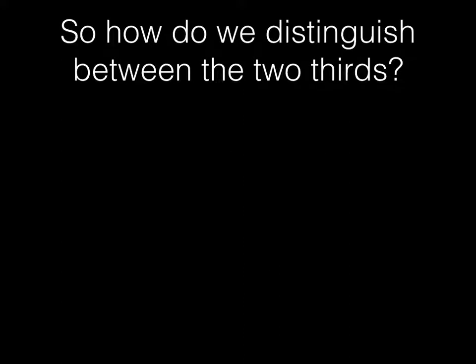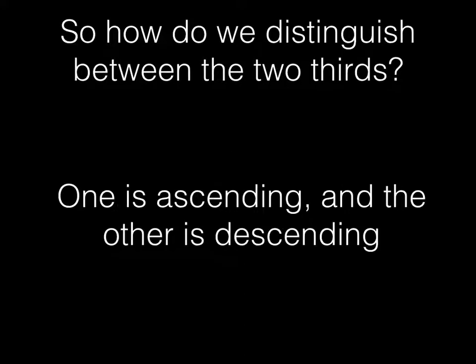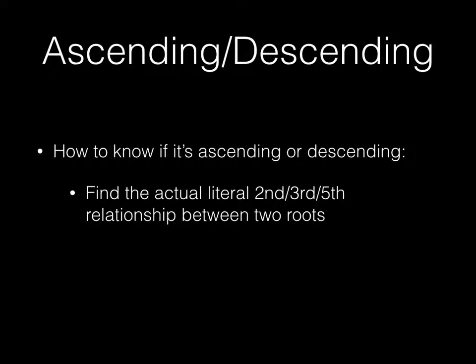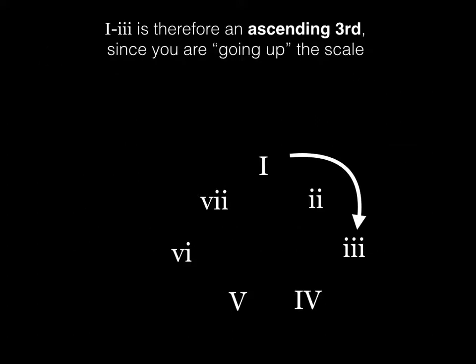So how do we distinguish between these two thirds? One is ascending and the other is descending. How do we know which is which? We have to find the actual literal second, third, or fifth relationship between two roots and then determine whether you're ascending or descending in the scale.